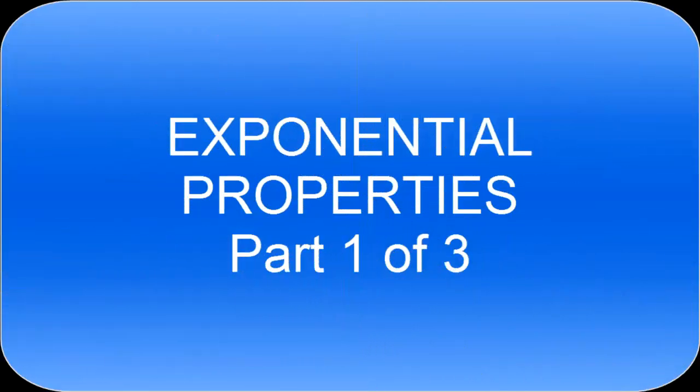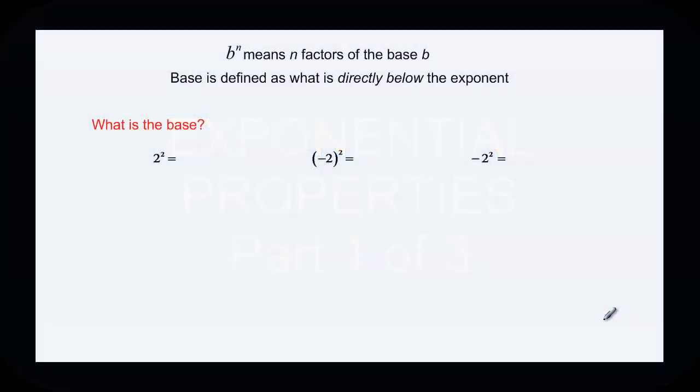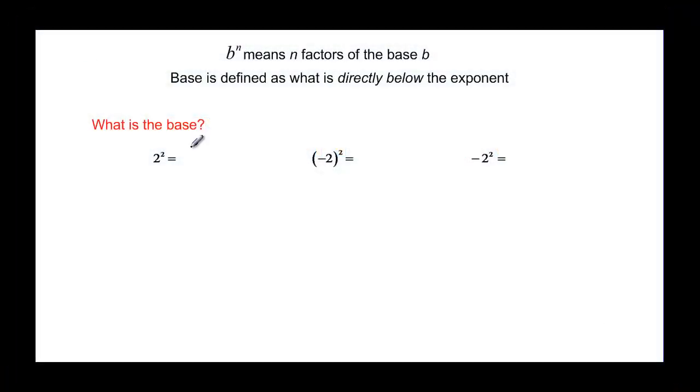This video talks about exponent properties and it will be one of three. So b to the n means n factors of the base b, and the base is going to be defined as what's directly below the exponent.